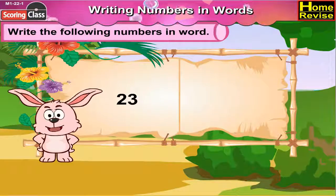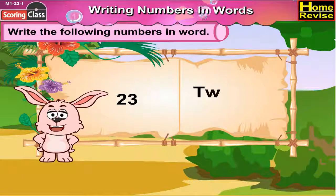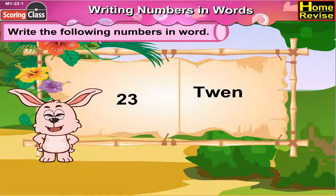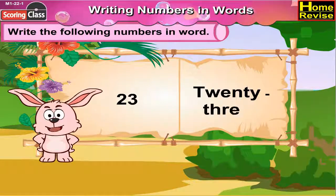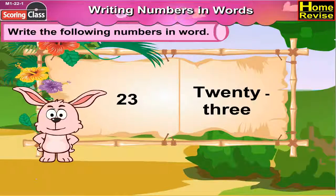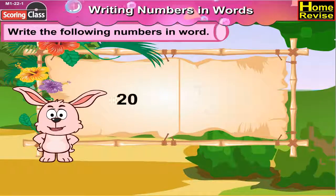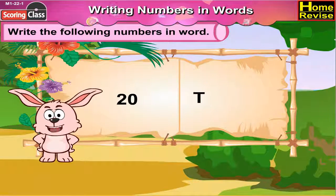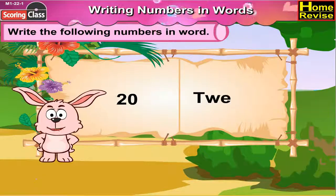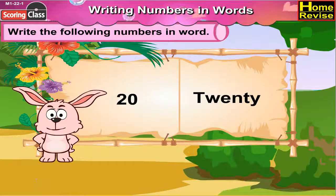23 — you can write 23 as T, W, E, N, T, Y, T, H, R, E, E. 20 — 20 can be written as T, W, E, N, T, Y.